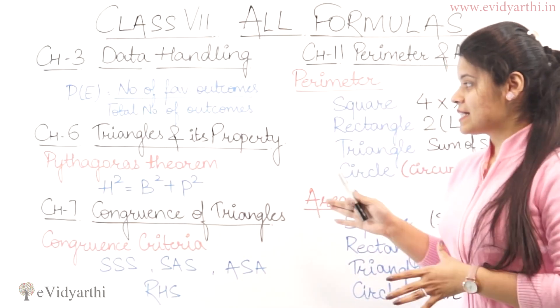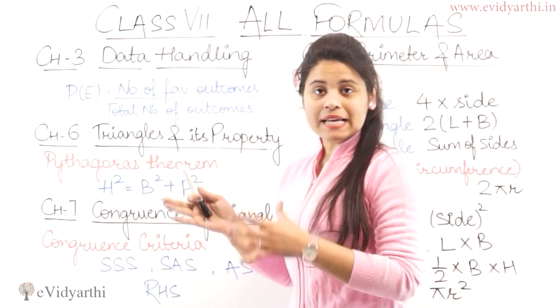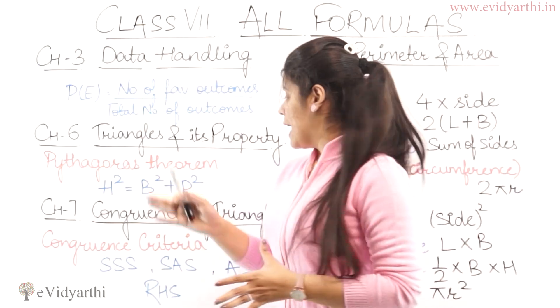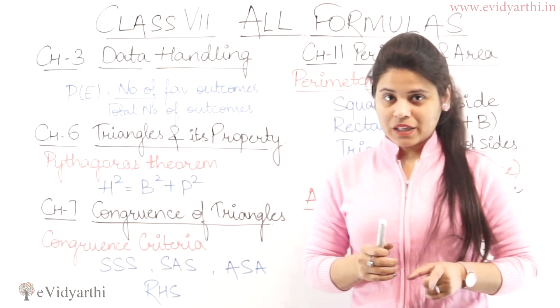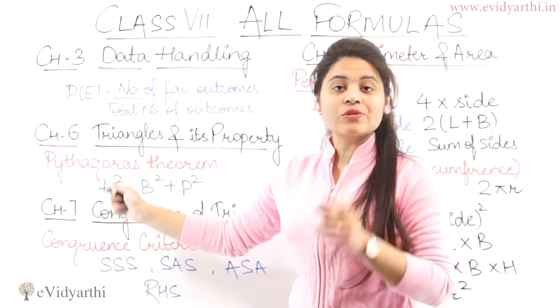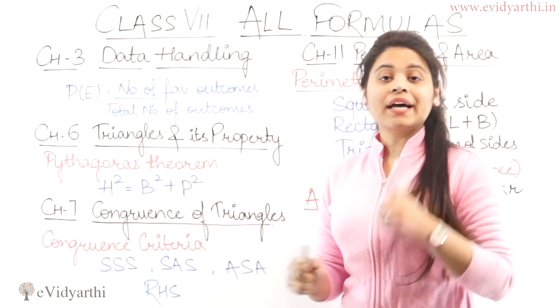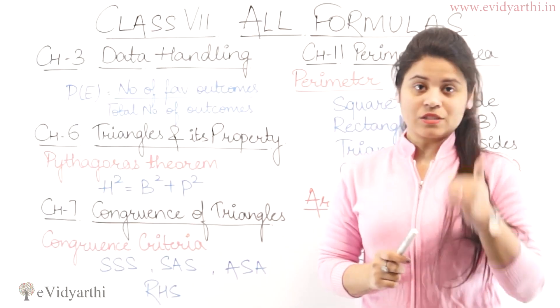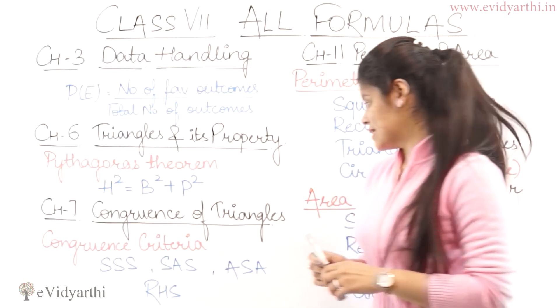Then we have chapter number 6, which is triangles and properties. In this you have to remember the Pythagoras theorem: hypotenuse squared equals base squared plus perpendicular squared.